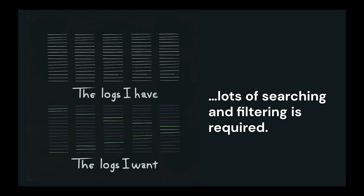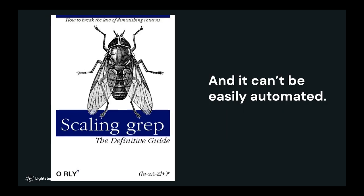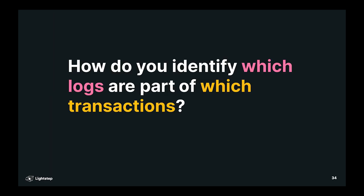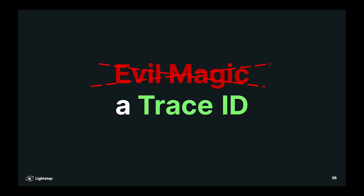Just stop and think for a second about how much time you spend trying to collect the data before you can analyze it. It's actually a lot of time. It's really painful. And what's worse, it can't be easily automated because it's sort of an ad hoc process — the data isn't particularly well structured. So how do you solve this problem? How do you identify which logs are part of which transaction? Evil magic? No. A trace ID.